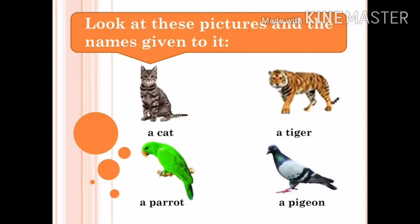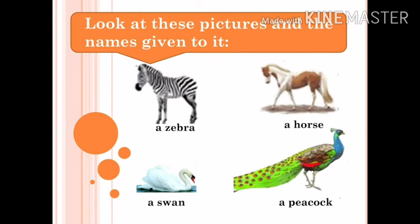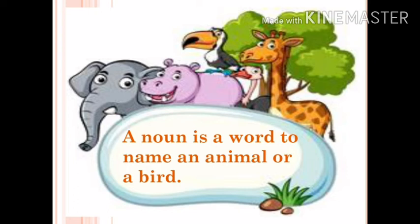So children, look at these pictures and the names given to it. So today we have learnt that a noun is a word to name an animal or a bird.